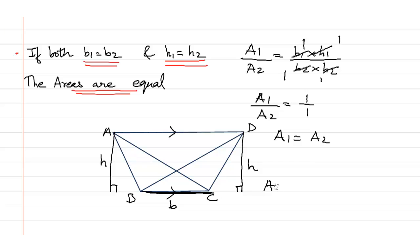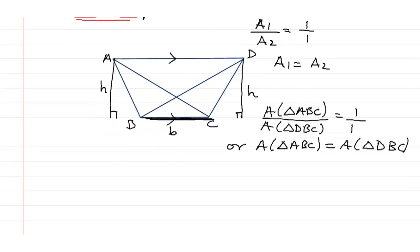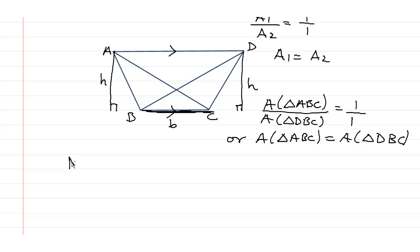So we can say that area of triangle ABC is equal to area of triangle DBC. Now solve Exercise 1.1 to get a better understanding.